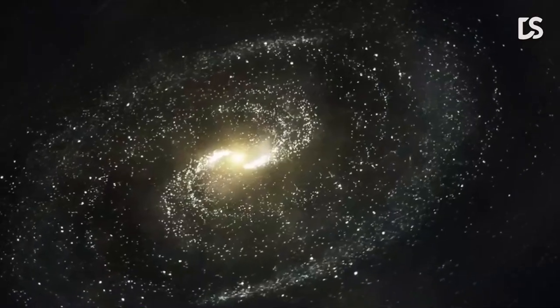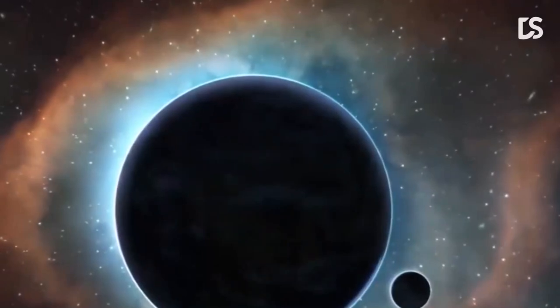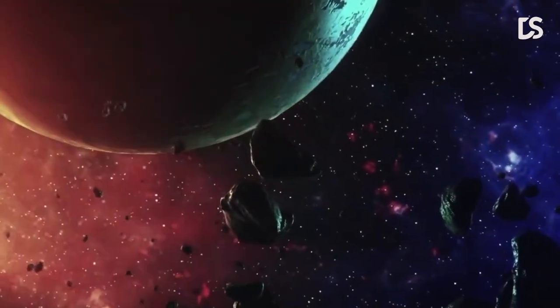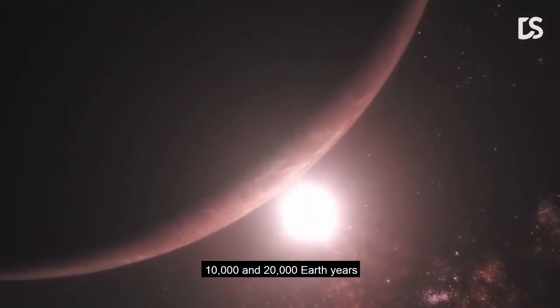The computer simulations that first predicted the existence of Planet Nine also predicted its orbit, which is most likely an extremely long, thin ellipse. It is still far distant from Pluto even when it is closest to the Sun. It would take Planet Nine between 10,000 and 20,000 Earth years to make just one orbit of the Sun at a distance of around 56 billion miles.